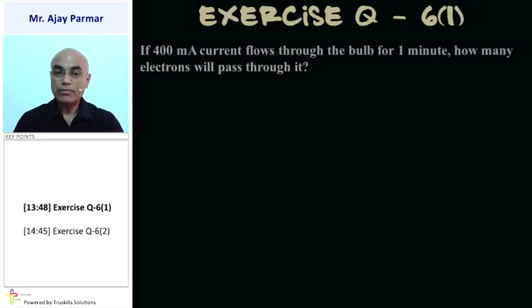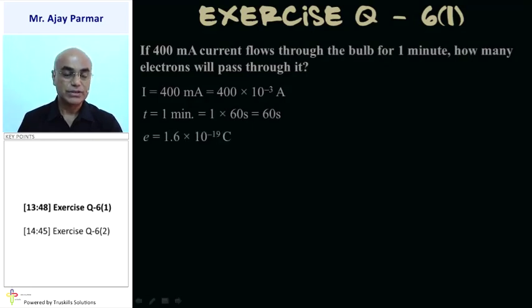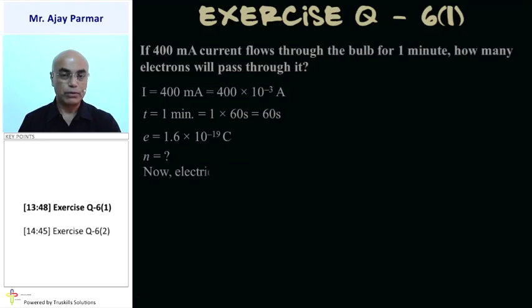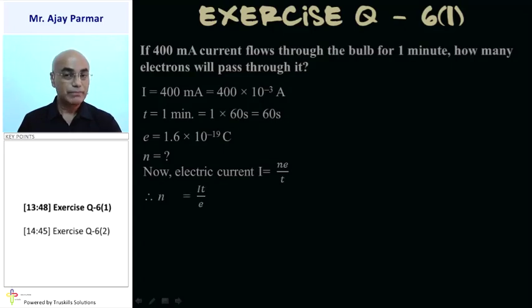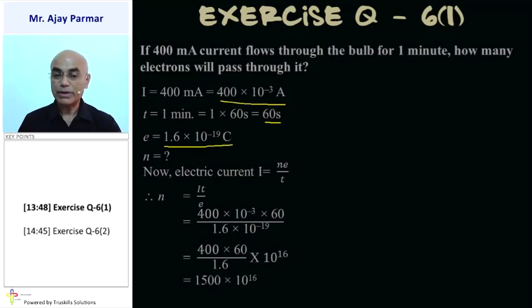Numerical 3: If 400 mA current flows through a bulb for 1 minute, how many electrons pass? Given: I = 400 × 10⁻³ A, T = 1 min = 60 s, E = 1.6 × 10⁻¹⁹ C. N = IT/E = (400 × 10⁻³ × 60) / (1.6 × 10⁻¹⁹), giving 1.5 × 10²¹ electrons passing through the conductor.